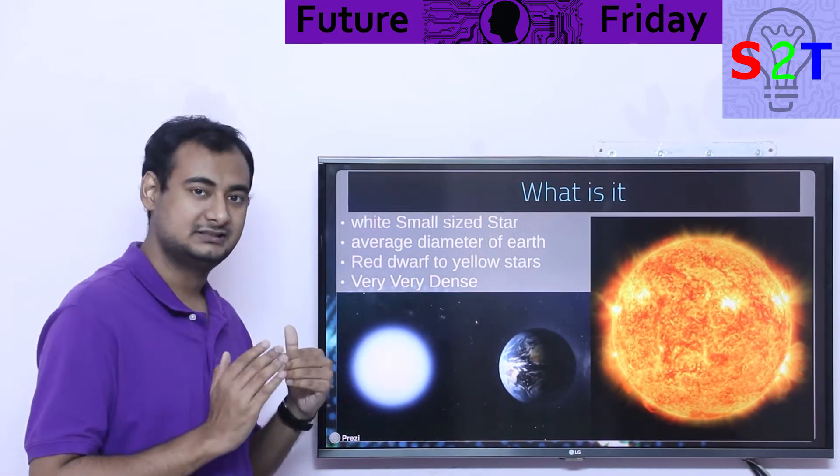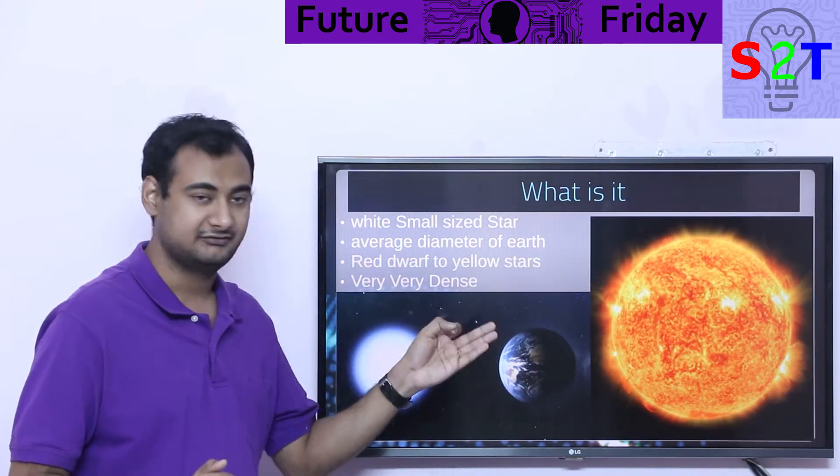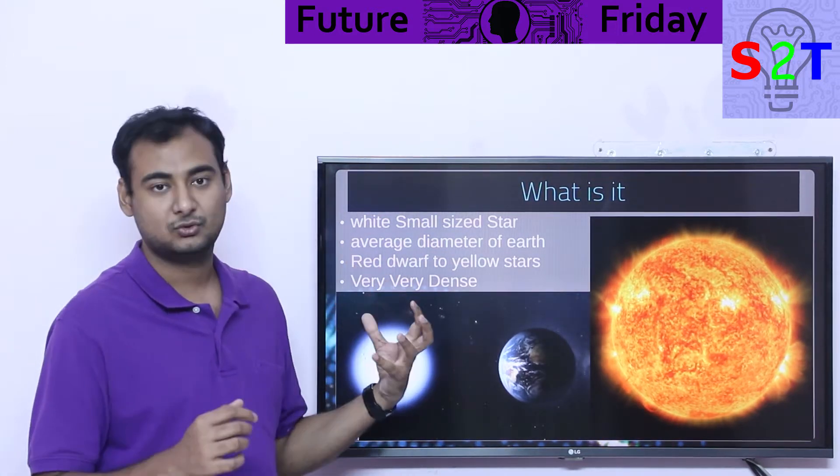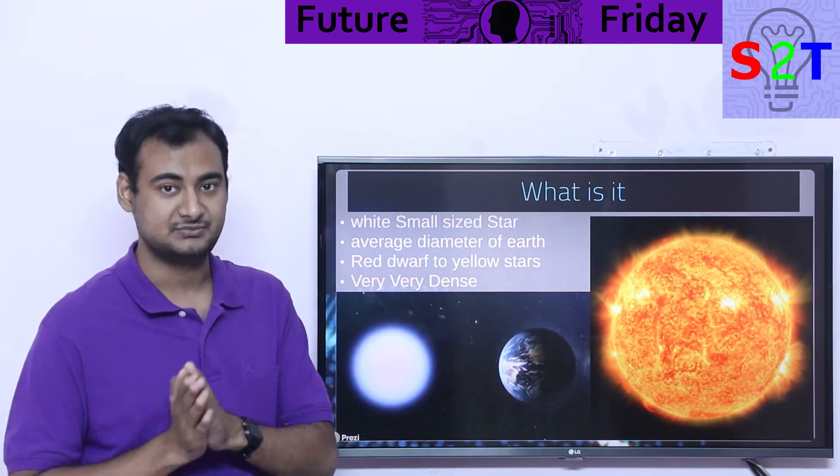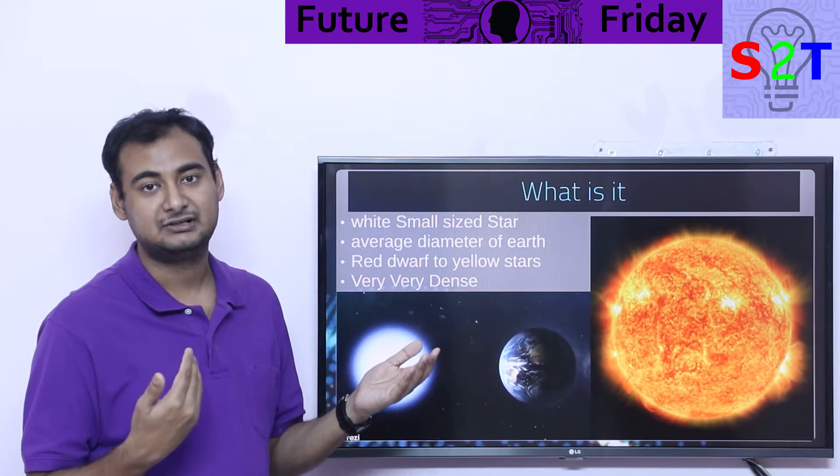Now, generally, this is a death stage. Once a star dies, only then does this happen, because fusion will not allow something this small to occur. Red dwarfs and yellow dwarfs can become white dwarfs, but not the big ones.